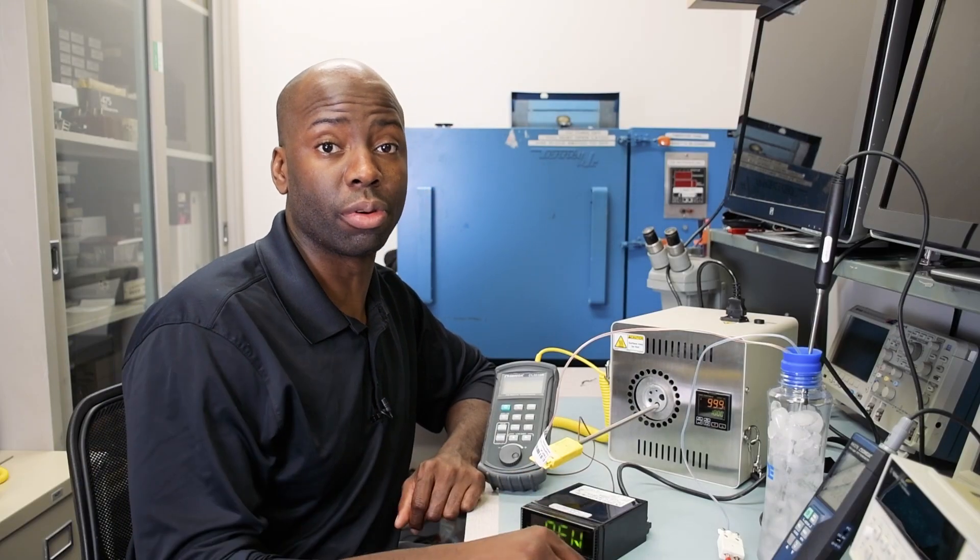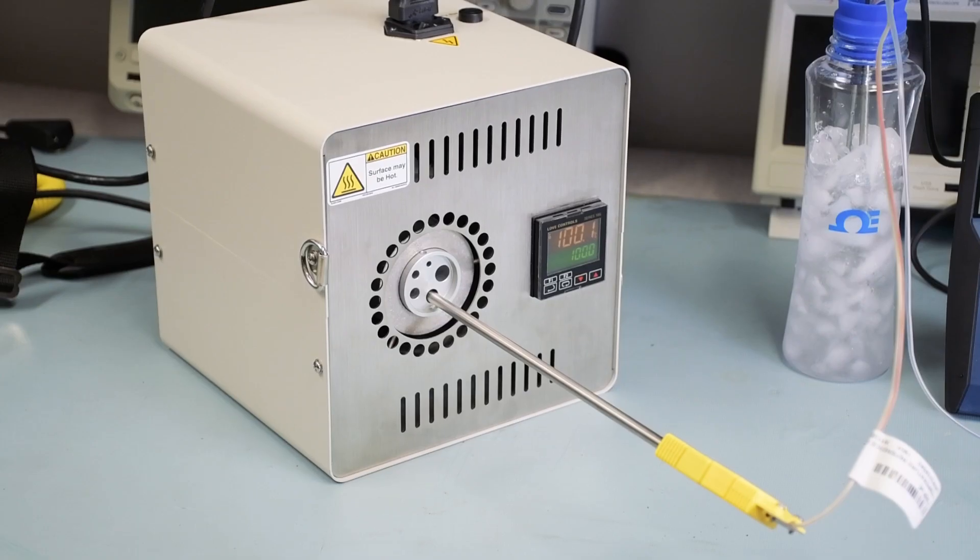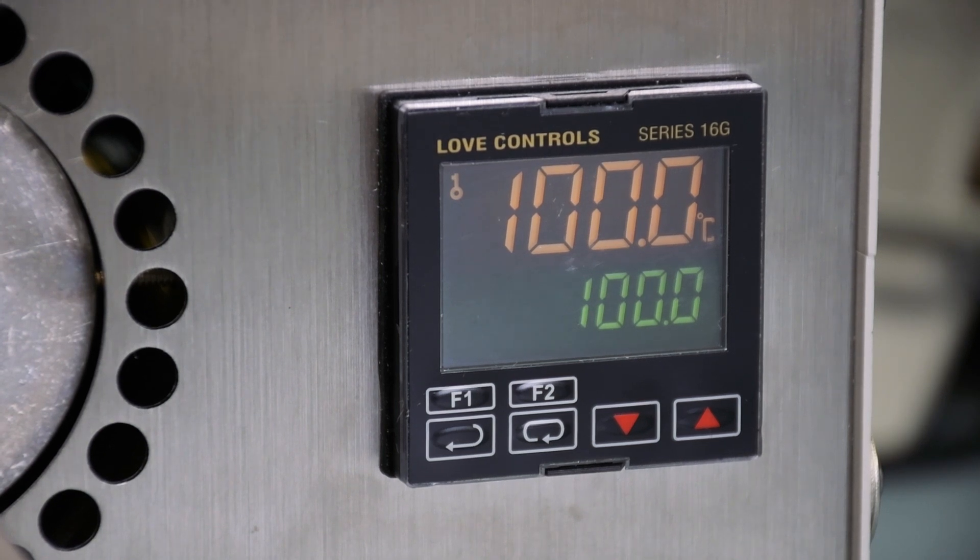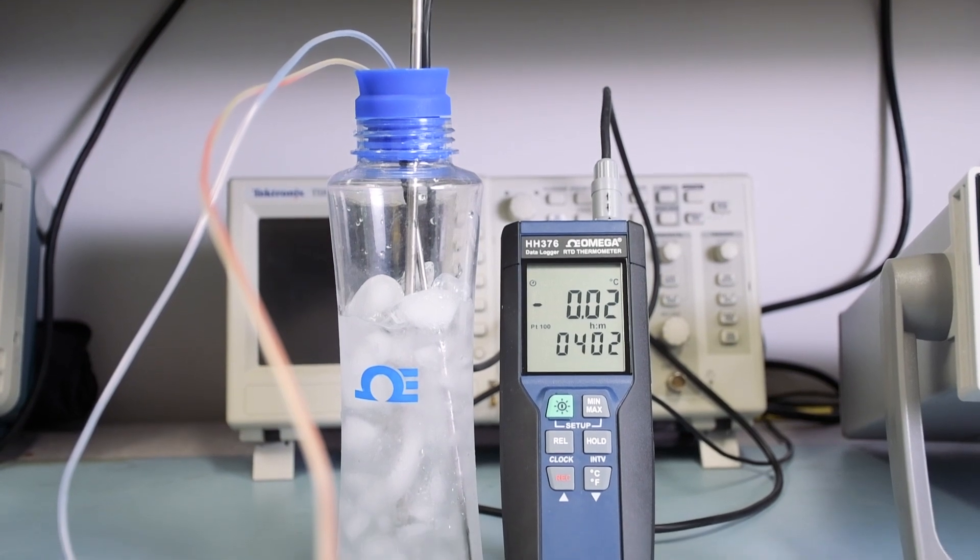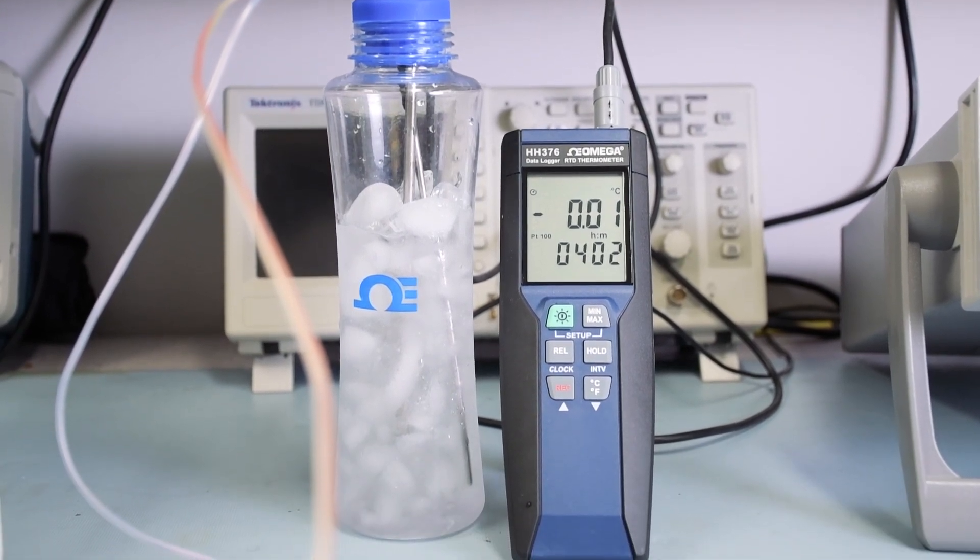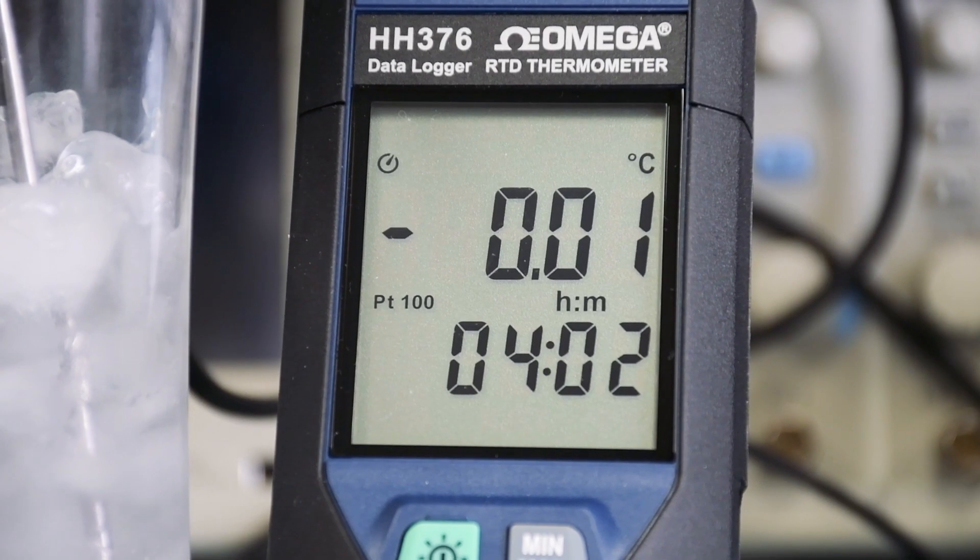So here, we're calibrating a Type-K thermocouple probe. We have it inserted into our dry block, and we have it set for 100 degrees Celsius. We're using this as our reference. We then have the Type-K thermocouple connected to our reference probe that's inserted into an ice bath, maintaining a temperature of 0 degrees Celsius.